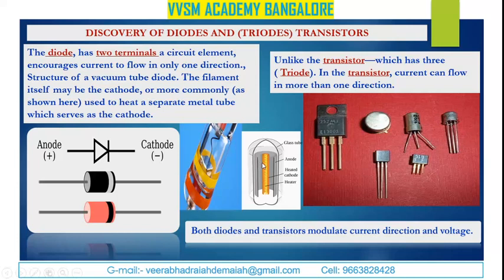Both diodes and transistors modulate current direction and voltage — modulate meaning it varies or changes. The direction of electric current is very important. In both cases, diodes and transistors modulate current direction and voltage. In diodes, it is only a single direction — unidirectional, or one direction only.